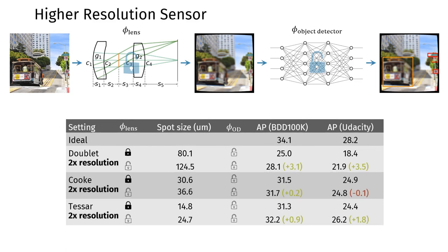We generally observe larger improvements in detection performance when artificially increasing the image resolution by a factor of 2 to simulate a higher resolution sensor.